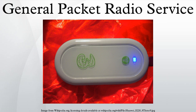GPRS extends the GSM Packet Circuit Switched Data capabilities and makes the following services possible: SMS messaging and broadcasting, always-on Internet access, multimedia messaging service, push-to-talk over cellular, instant messaging and presence, Internet applications for smart devices through wireless application protocol, point-to-point service, internetworking with the Internet, point-to-multipoint service, point-to-multipoint multicast, and point-to-multipoint group calls. If SMS over GPRS is used, an SMS transmission speed of about 30 SMS messages per minute may be achieved. This is much faster than using ordinary SMS over GSM, whose transmission speed is about 6 to 10 SMS messages per minute.